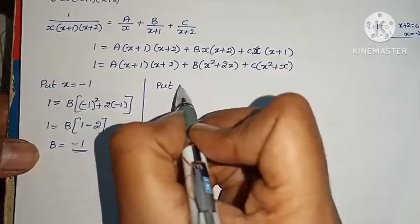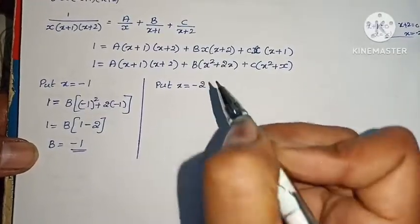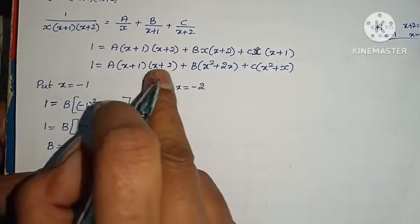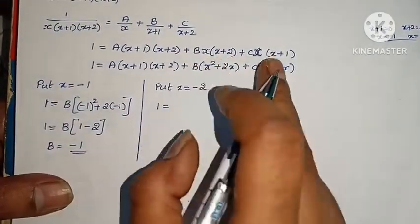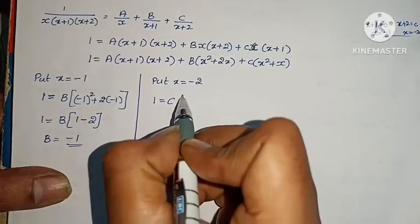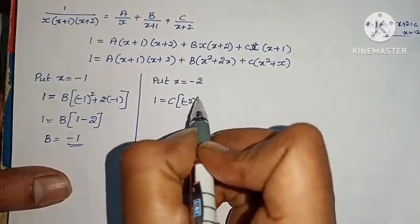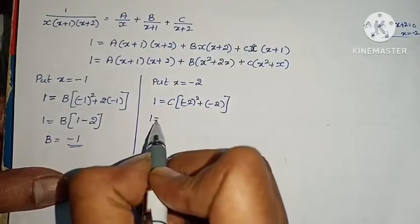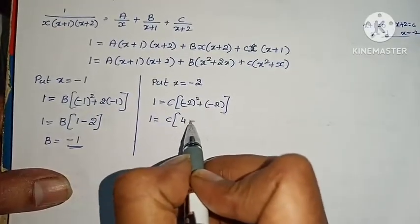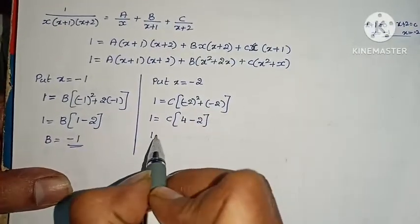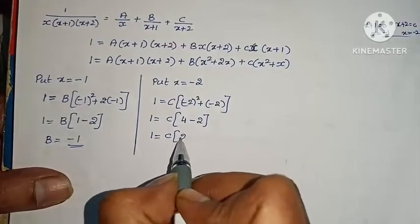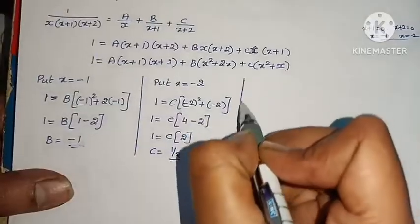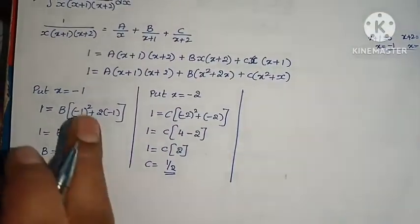Put x equals minus 2: 1 equals C into (minus 2 whole square plus minus 2), giving 1 equals C into (4 minus 2). So 1 equals C into 2, therefore C equals 1 by 2.